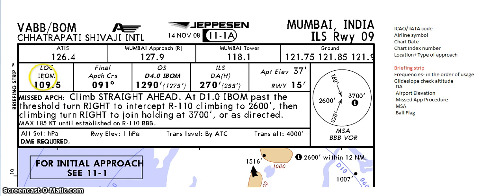After that you can see the localizer frequency, IBOM 109.5. Most localizer frequencies start with the letter I, standing for ILS. Below that, the final approach course is 090 degrees — this is the course you should be tracking once established on the final approach.